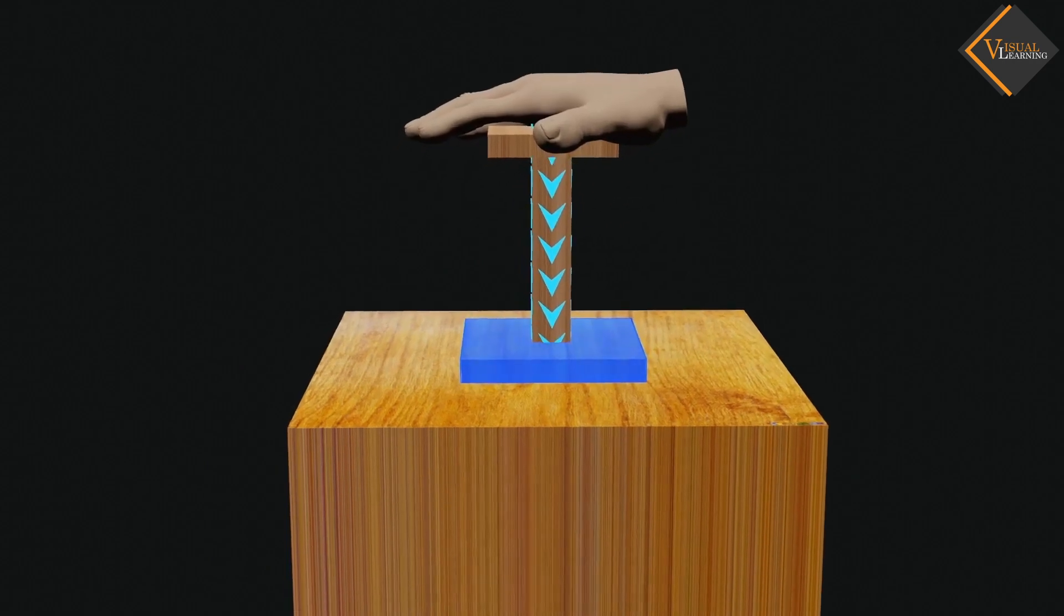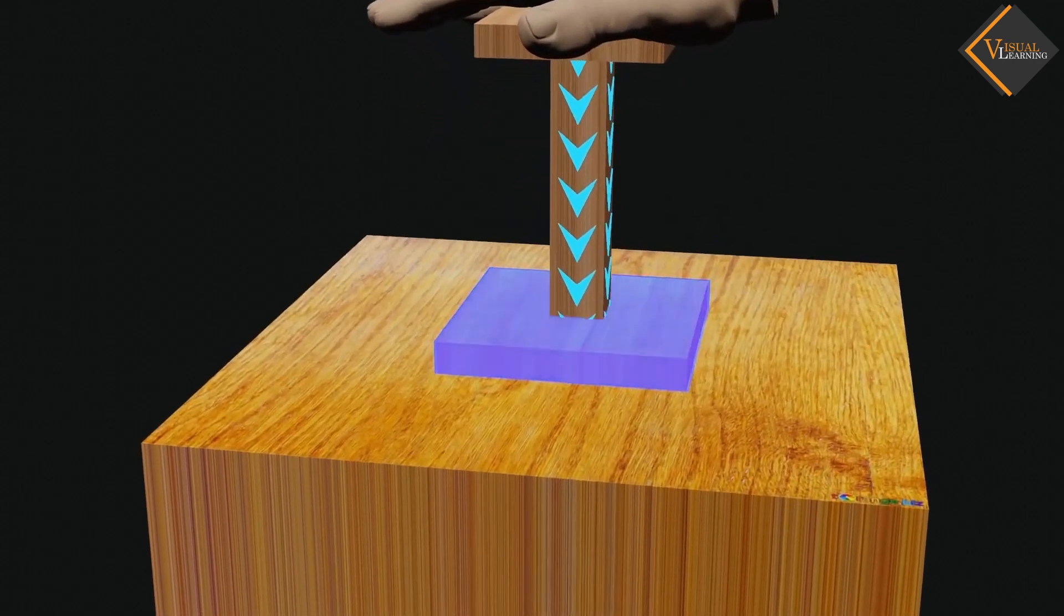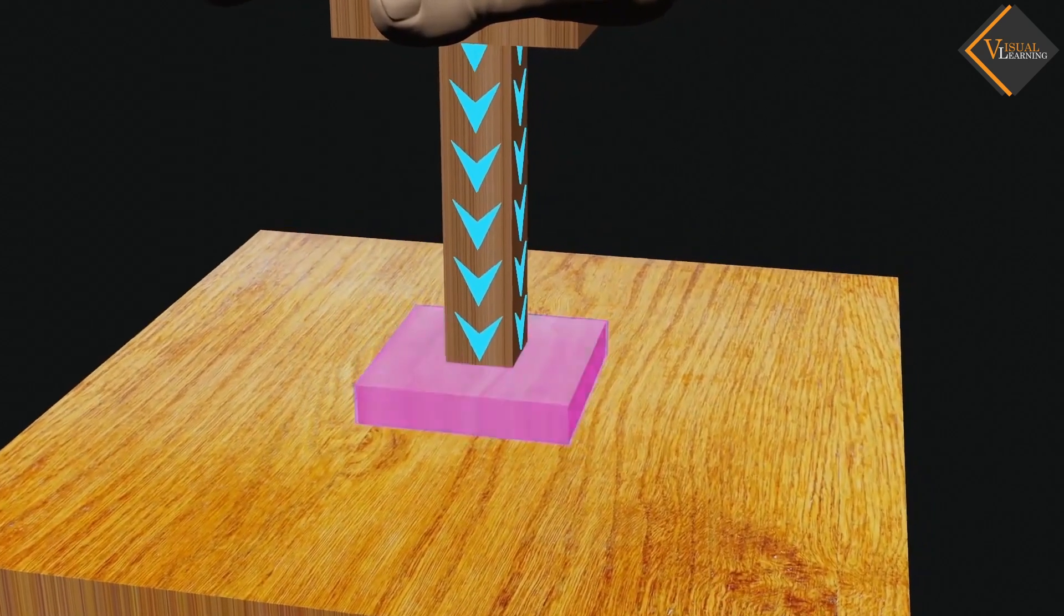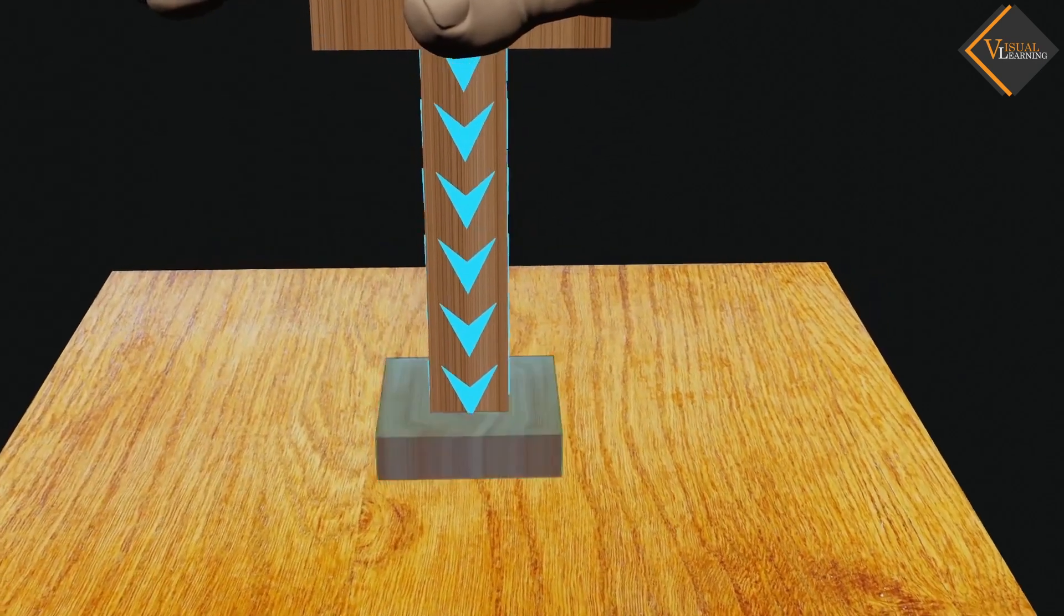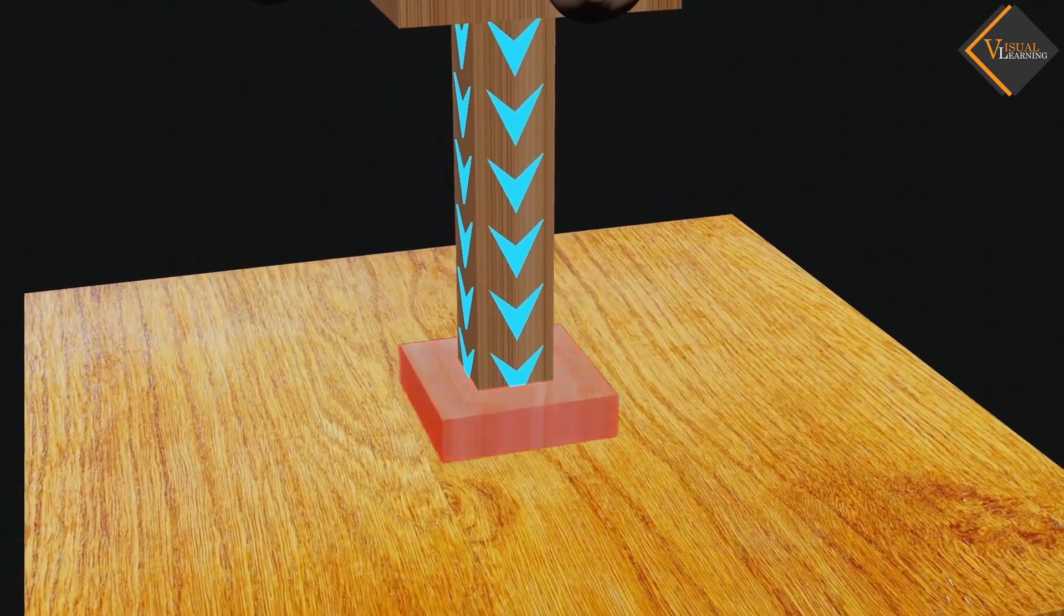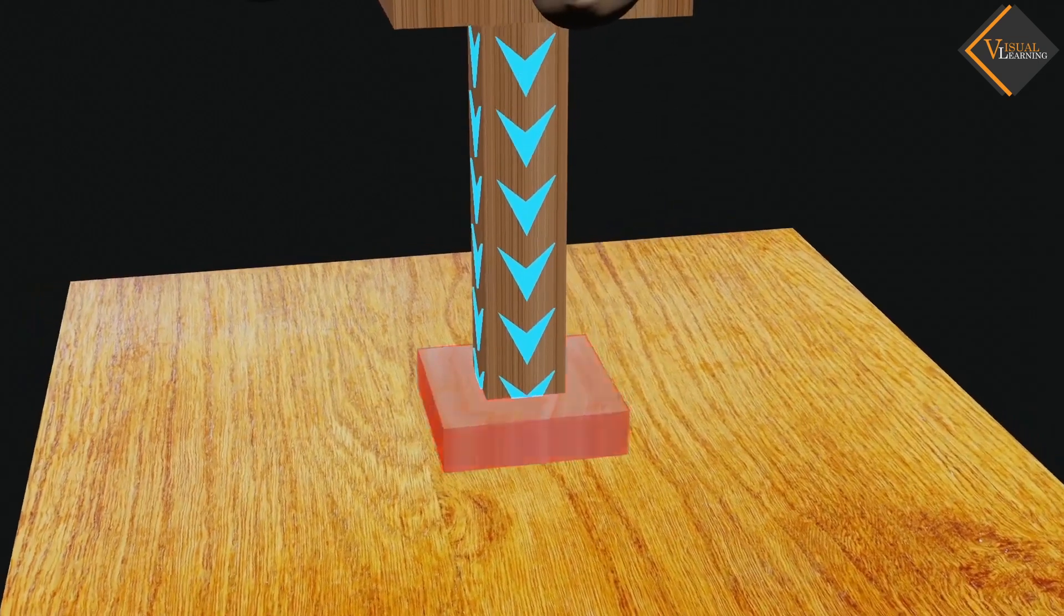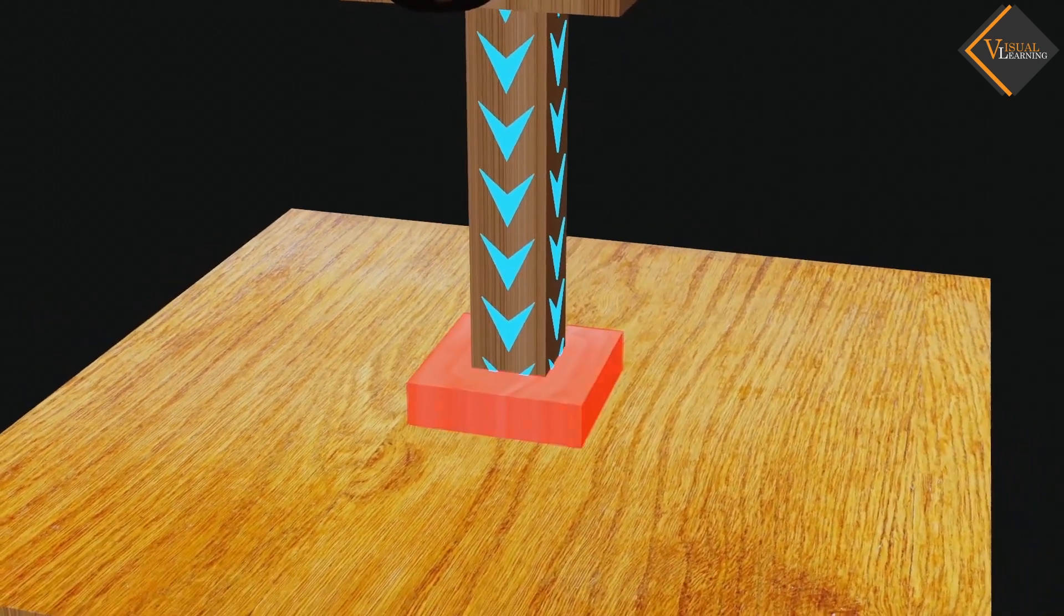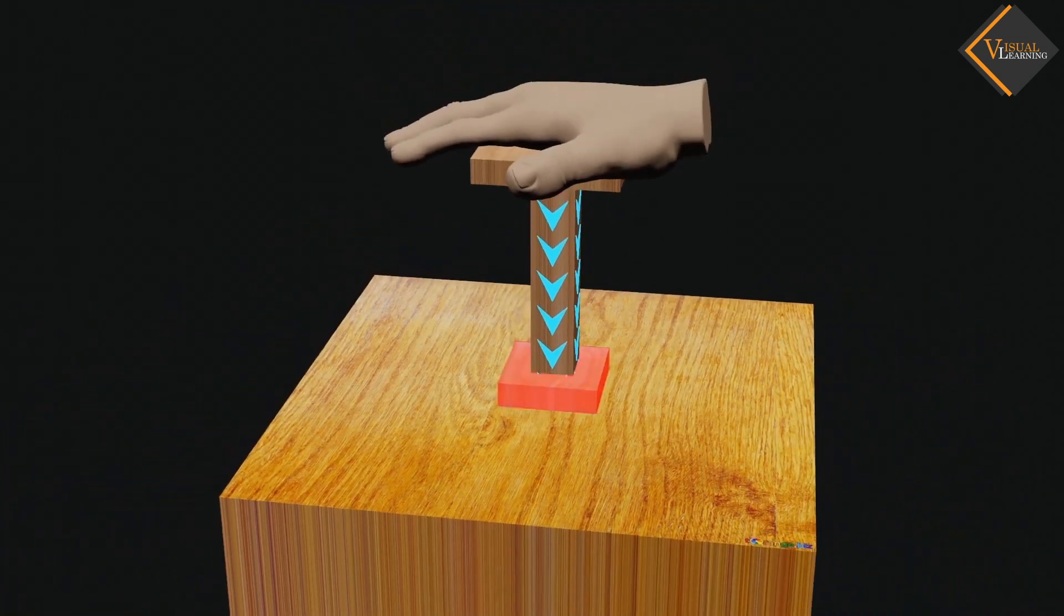Now, take this scenario. Assume that we decrease the surface area of the bottom of the wooden block. As the area decreases, the perpendicular force gets concentrated on a small area with the same magnitude. So the effect of force on each point of surface area is more than the last one. This means that force of the same magnitude is distributed in a small area.